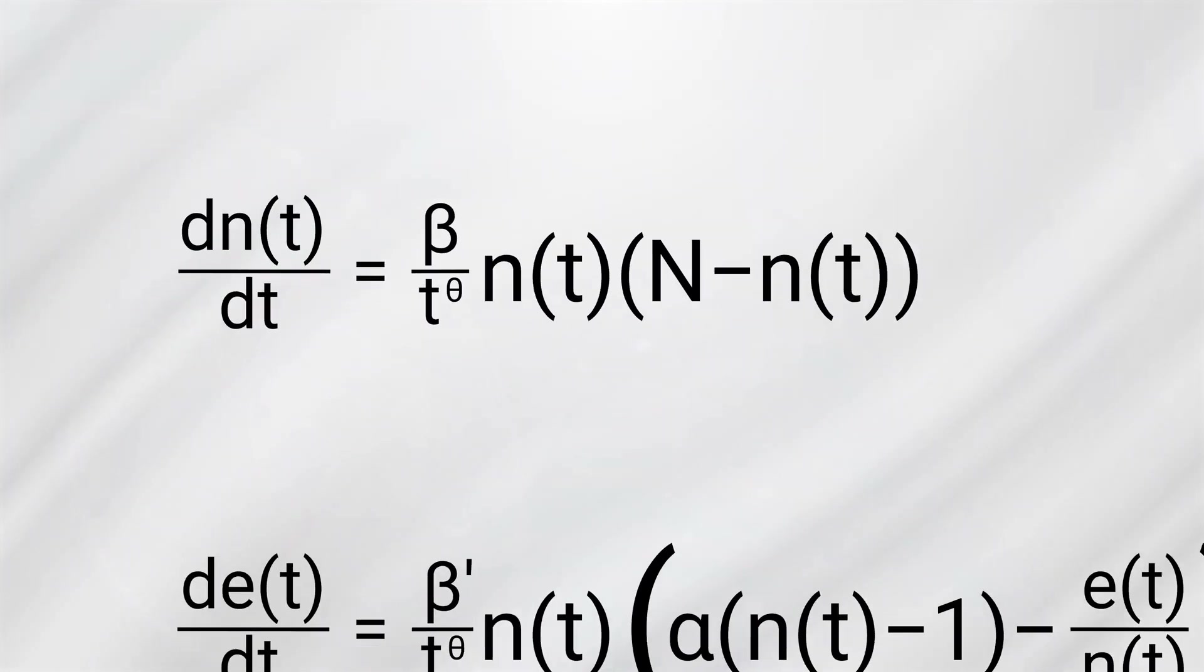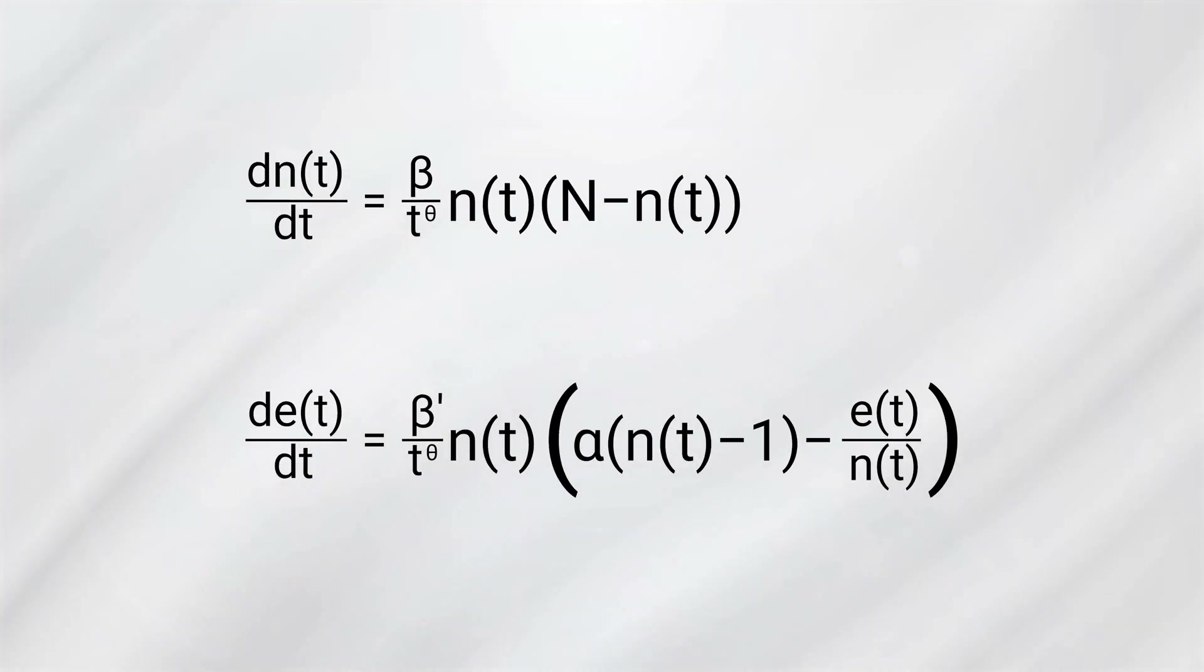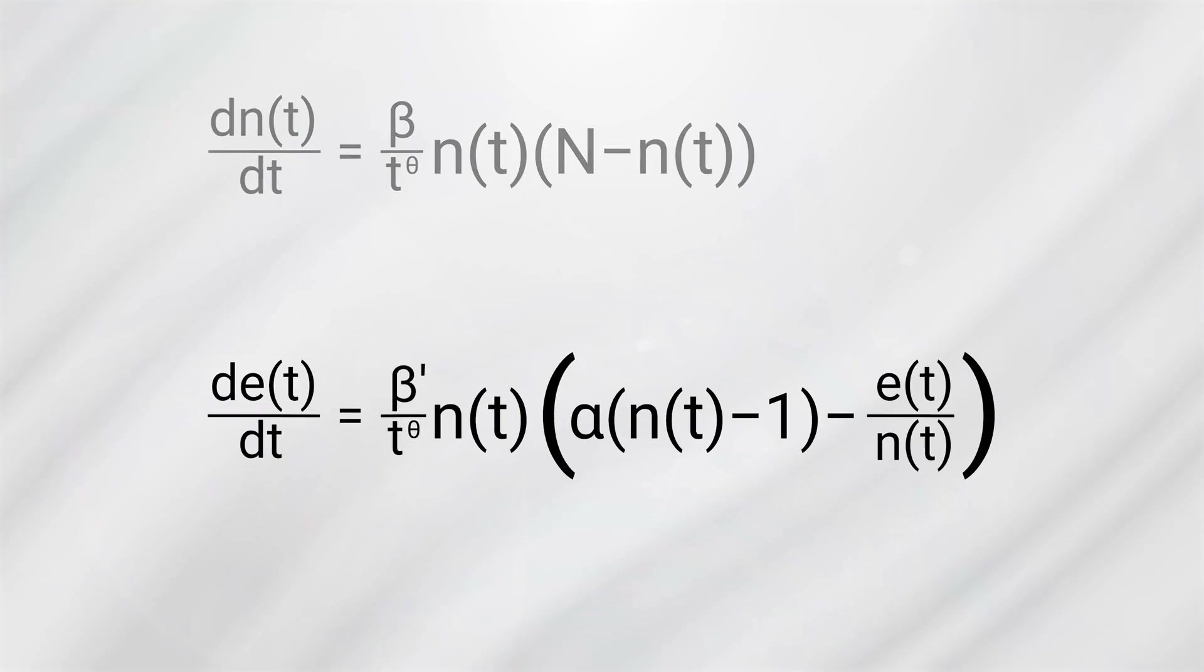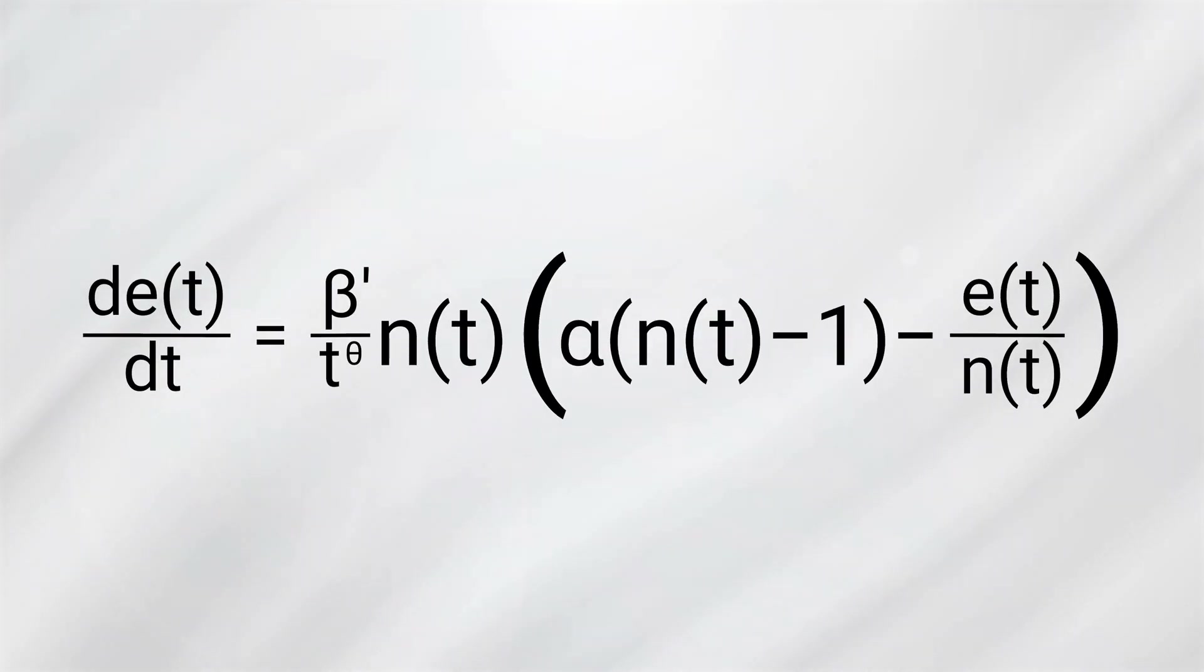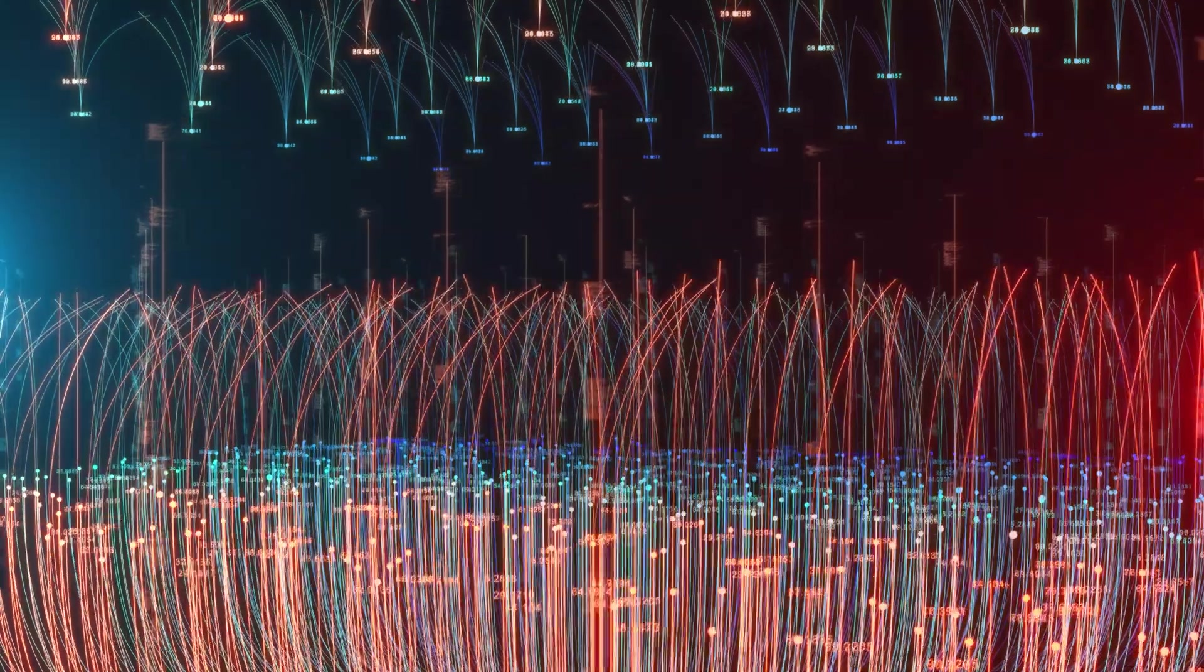There's also a similar but more complex equation that describes the growth of links. In our case, the second equation represents the Bitcoin price that is proportional to the number of links. We're not going to dive into the details because it's a bit more complicated. However, it's worth noting that alpha represents the average number of possible links each node has.